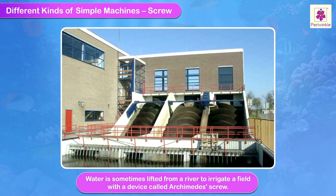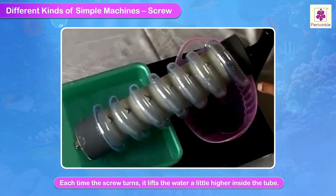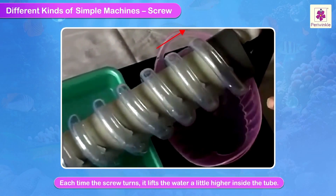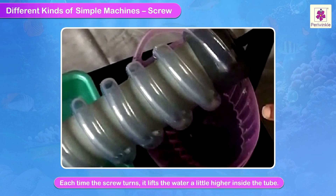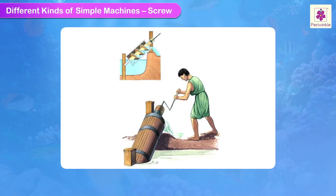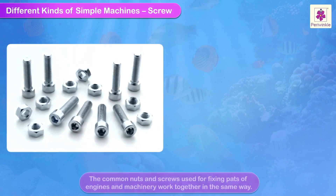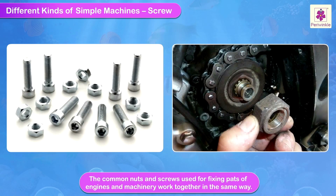Water is sometimes lifted from a river to irrigate a field with a device called the Archimedes screw. Each time the screw turns, it lifts water a little bit higher up inside a tube. It was a commonly used device in Egypt. The common nuts and screws used for fixing parts of engines and machinery work together in the same way.